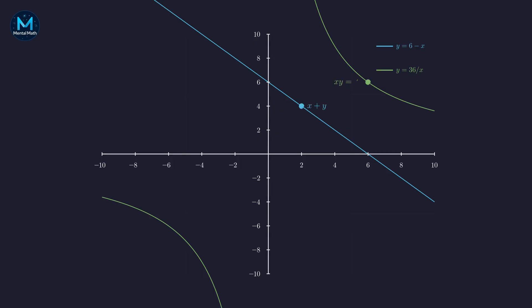Look at that! The line and hyperbola never meet. No intersection means no real solutions. This is why we had to venture into complex numbers to solve this system.